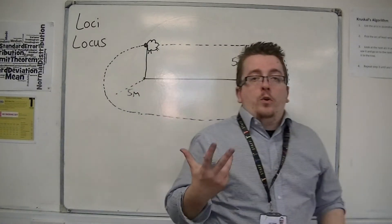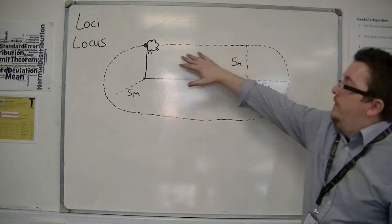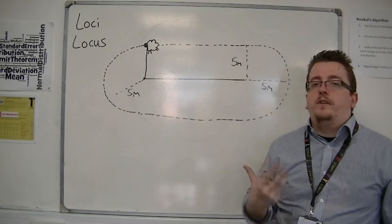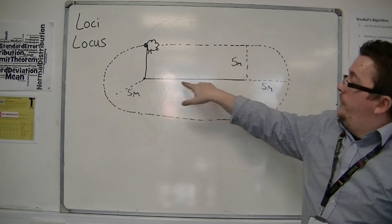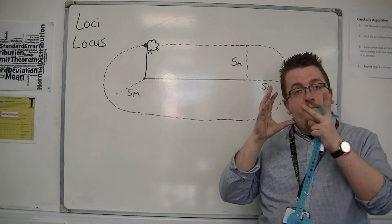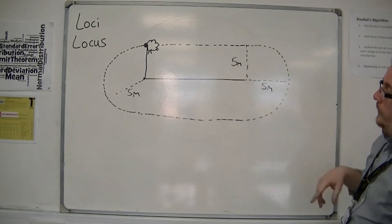And so this is what we would call a locus of a line. Any part inside this area the sheep can travel to and can get to. So that would be a locus of a line. So you see the locus of a point is a circle. The locus of a line looks similar to this.